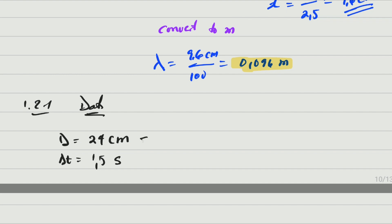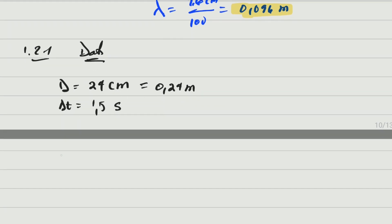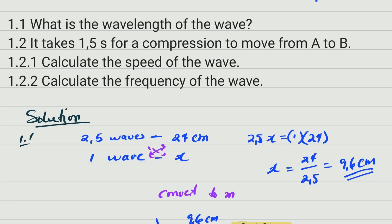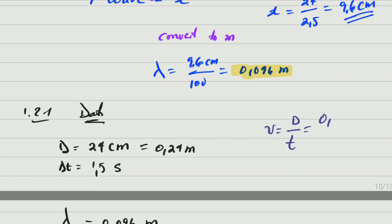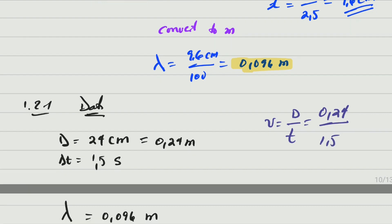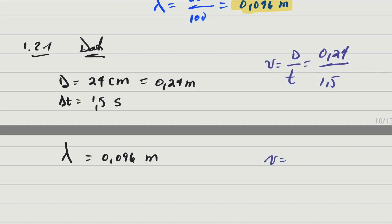We also have the wavelength, which is 0.096 meters, though it may not be needed here. The formula for speed by definition is speed = distance ÷ time. Substituting: distance = 0.24 m, time = 1.5 s. This gives speed = 0.16 meters per second.